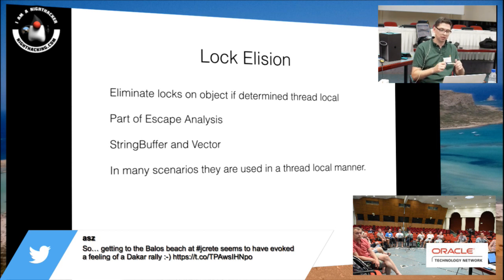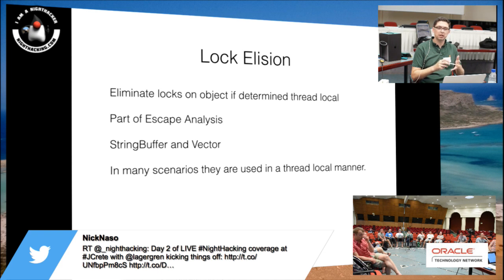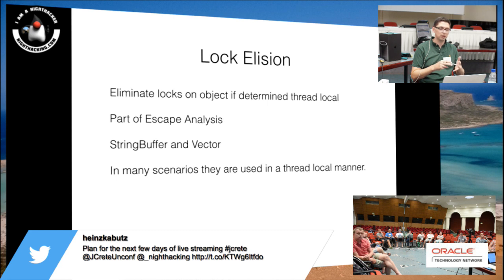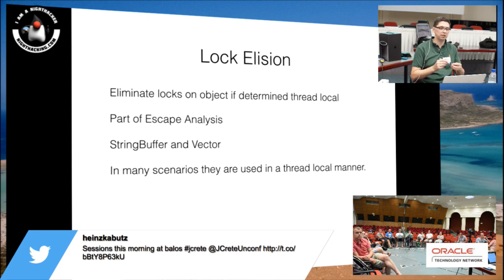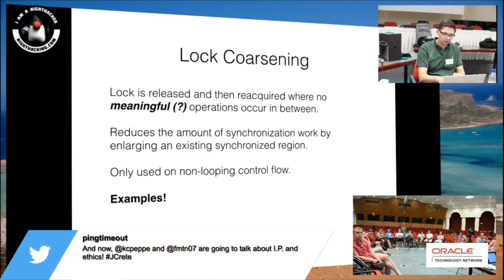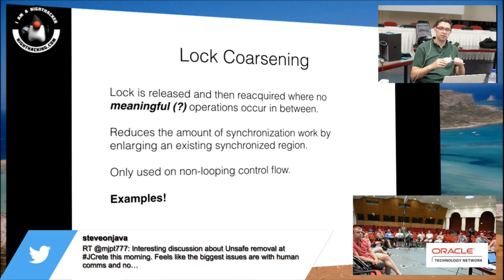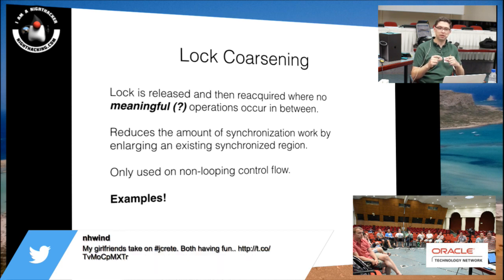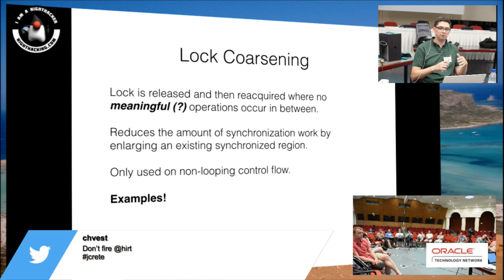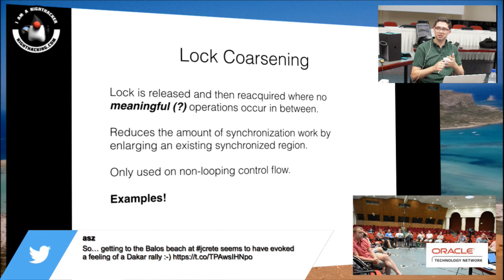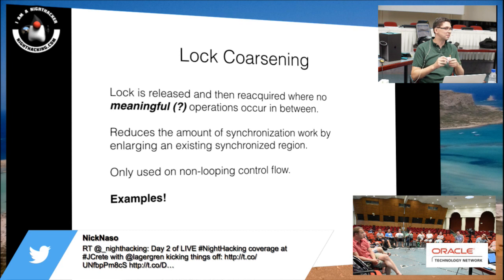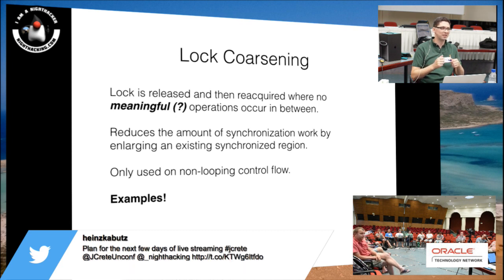Another feature escape analysis can produce is lock elision — can locks be eliminated if the object is determined thread-local? Examples include StringBuffers and Vectors, which are synchronized objects but quite often used in a thread-local manner. Lock coarsening is a different optimization not based on escape analysis. It's where you have two synchronized regions locking on the same object with other code in between, and the optimization is to enlarge the synchronized region to only have one lock, if no meaningful operations occur in between.